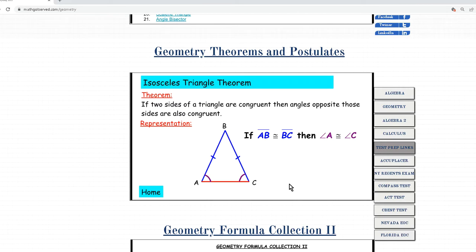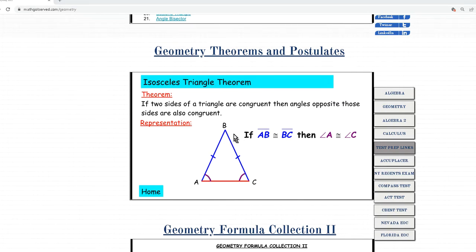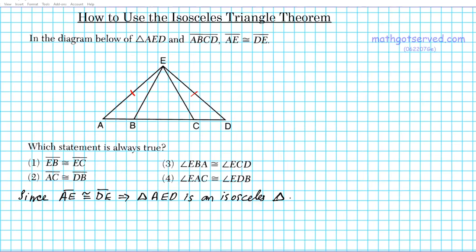The isosceles triangle theorem tells us the following: if two sides of a triangle are congruent, then the angles opposite those sides are also congruent. Consider triangle ABC — if sides AB and BC are congruent, then the angles opposite those sides, the base angles, are also congruent. So angle A is congruent to angle C.